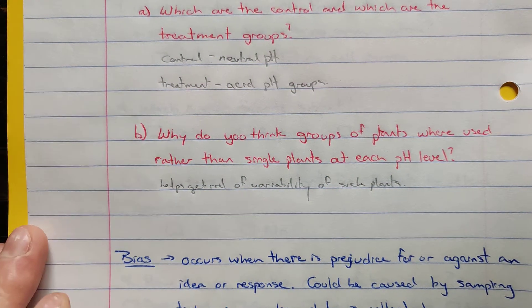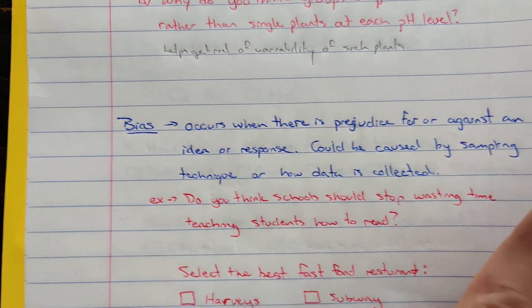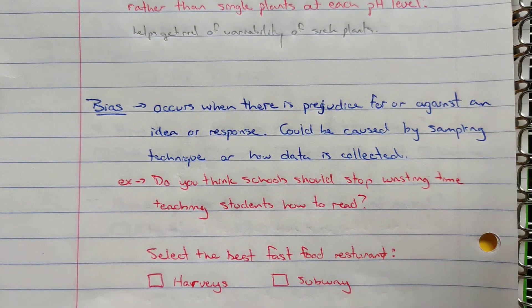Another term that we need to look at is bias. You should be familiar, but bias occurs when there's a prejudice for or against an idea or response. Could be caused by the sampling technique itself. We talked about that being things like when you do a convenient sample or a voluntary sample, especially people that have a certain feeling about something might be more apt to respond than those who don't.